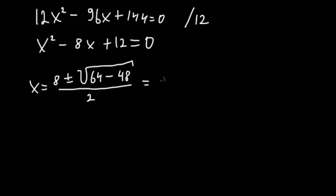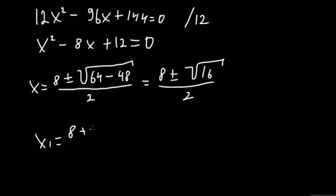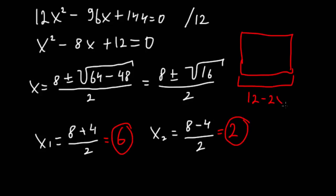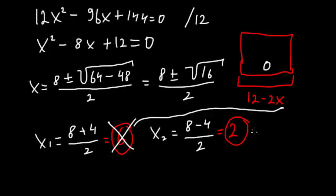So we get two values. x₁ is (8 plus 4) divided by 2, which equals 6. x₂ is (8 minus 4) divided by 2, which equals 2. Now we have to go back to the original picture and see if either of these values doesn't fit. If x equals 6, then the side length would be 12 minus 2 times 6, which gives us zero — and it cannot be zero. So we cannot use x equals 6. But x equals 2 gives us 8, which is valid. So the answer is x equals 2 for the height, and 8 for the sides.